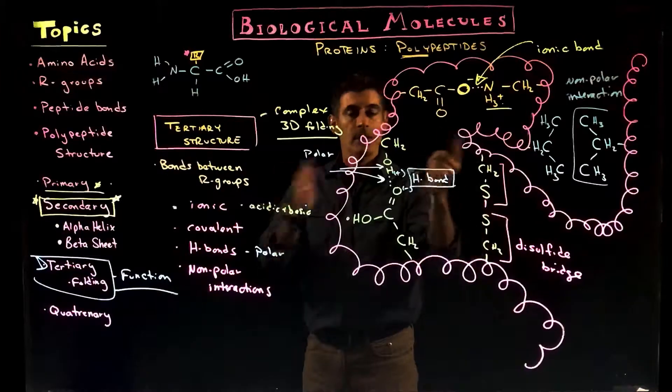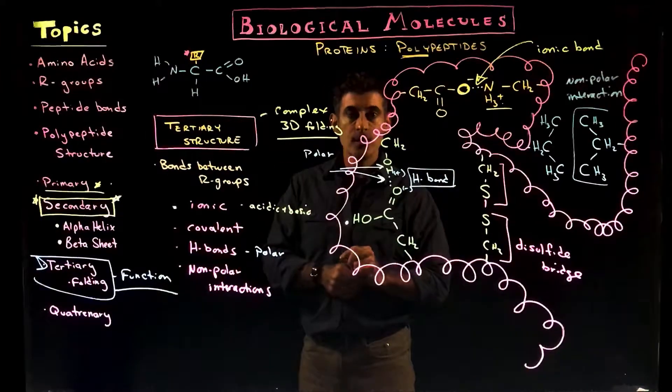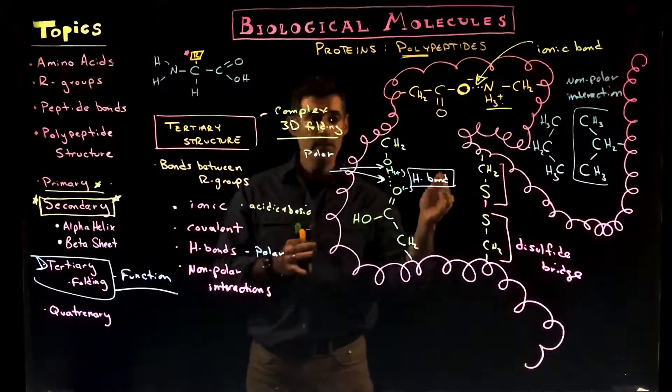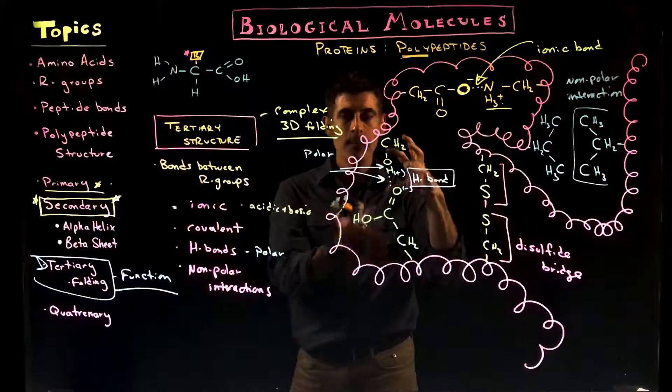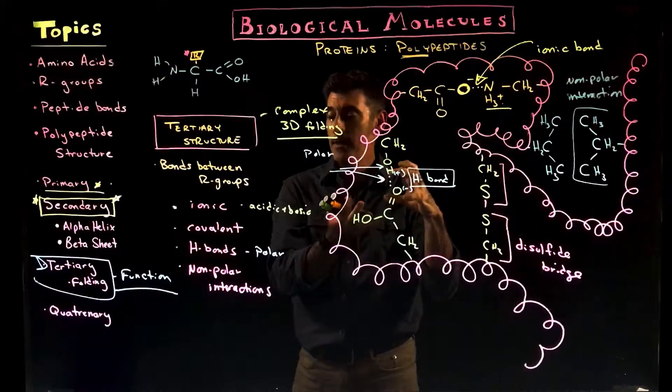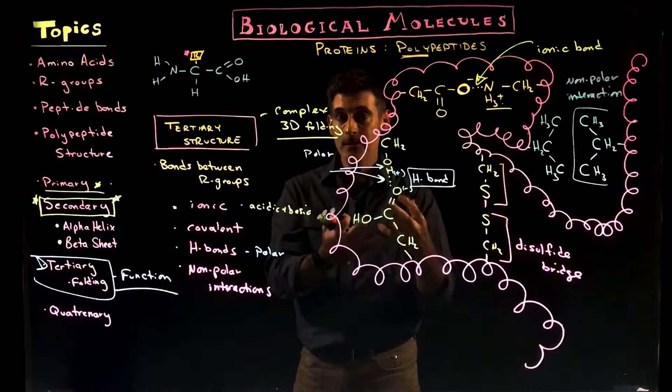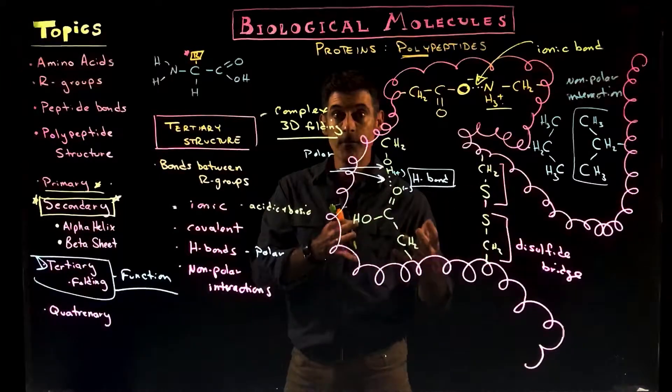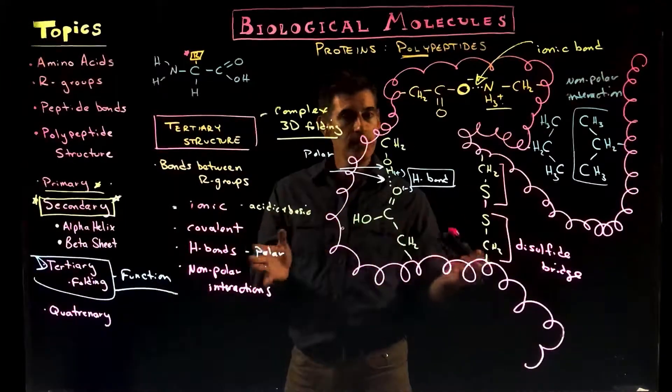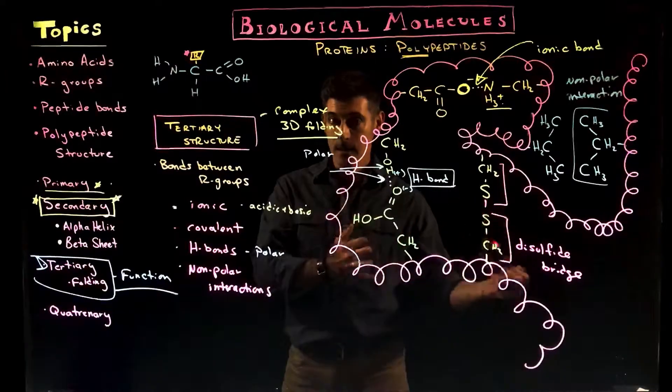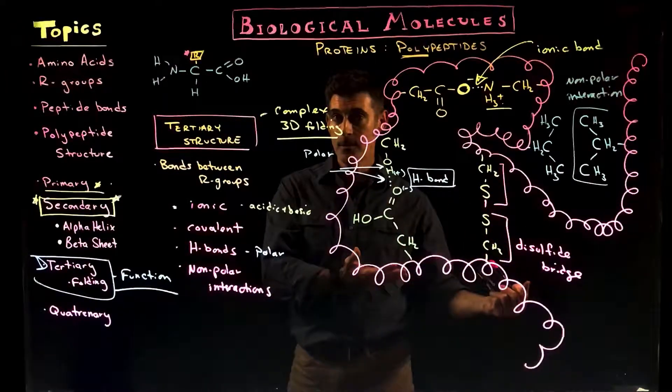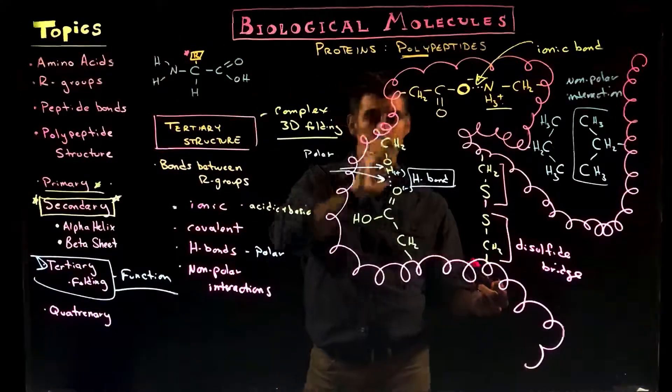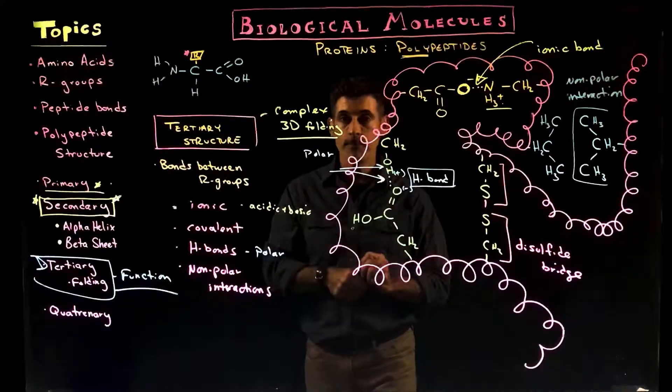Secondary structure, we get the twisted helices and sheets. It adds more to it. It's still not functional. It still can't do anything. It's only at this level, only once we reach this more complicated three-dimensional folding and the protein takes that shape, that now it can interact with other molecules. It can bind to them, change them, move things, move itself. It can act as a motor protein. All the things that proteins do can now be done once it has this particular shape. And that shape is established by the R groups. They're what dictate what type of shape is going to occur. And that's it.